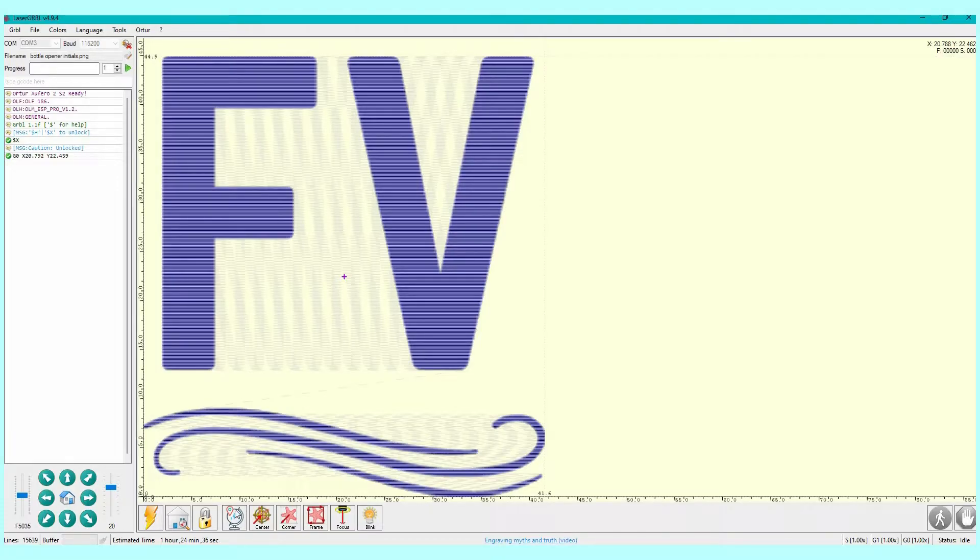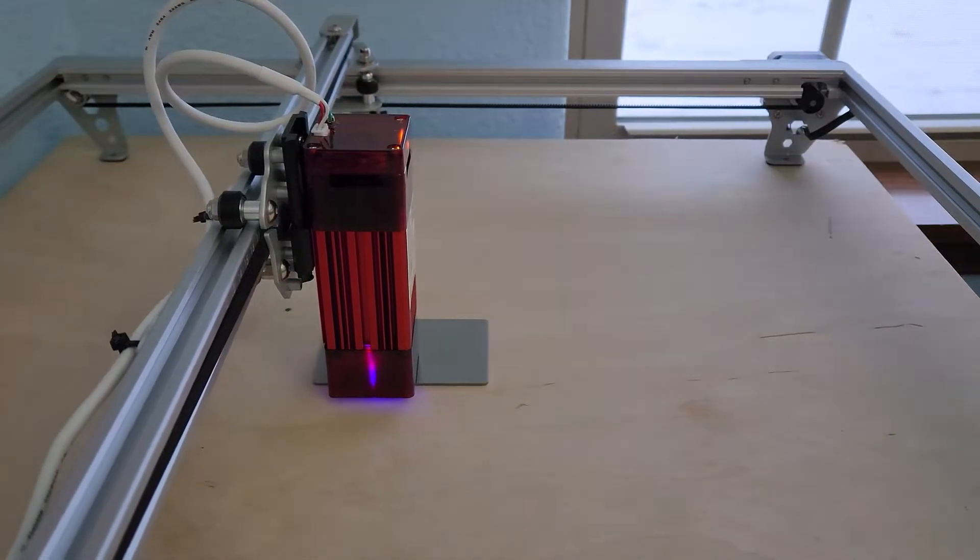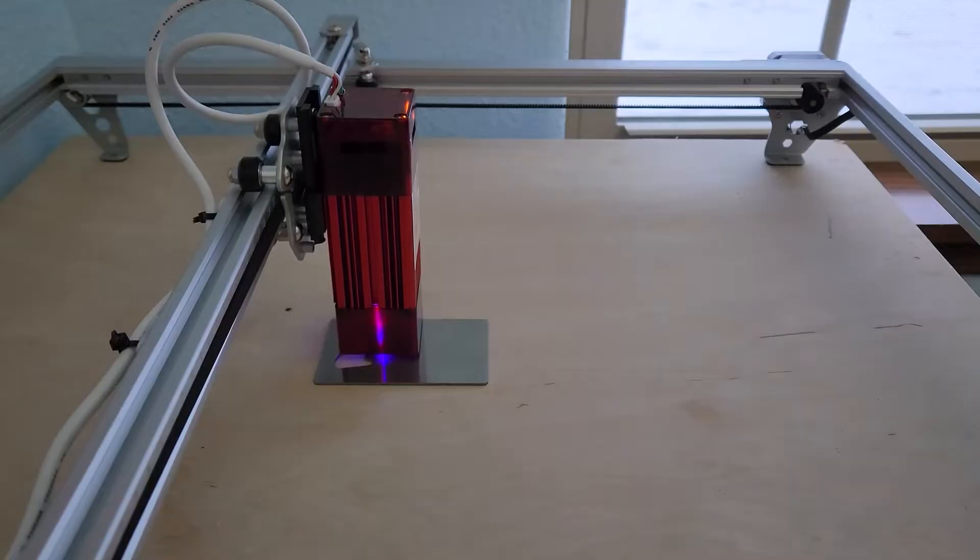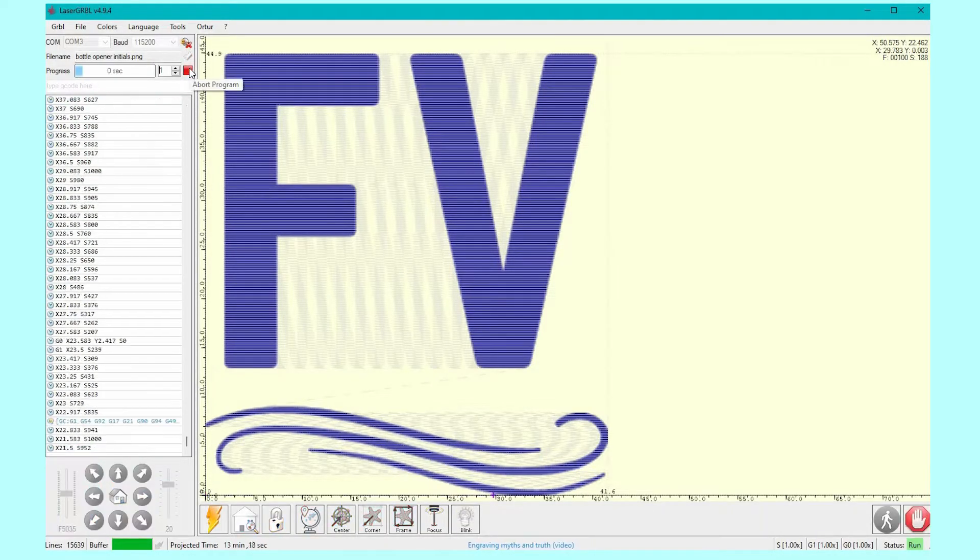Now we want to make sure that the laser is centered. I'm going to hit the center button, go over to my machine and make sure that it's where it needs to be. Then I can click this frame button and it just draws a little frame around my design. So again, I can ensure that it's going to be engraved in the right place. When I'm all ready to go, I just come up and click this green button and it's going to start engraving.